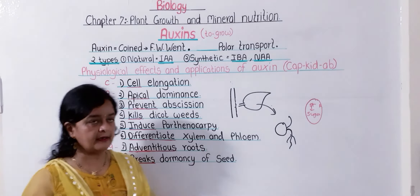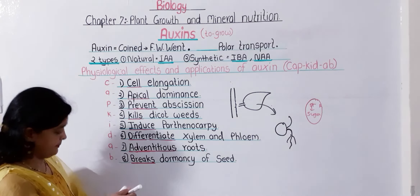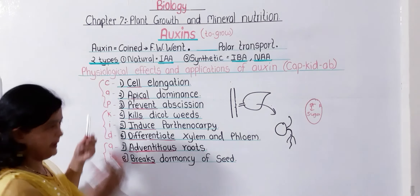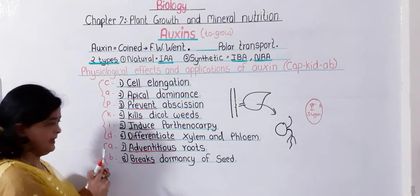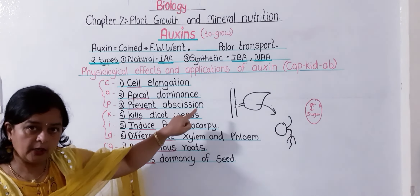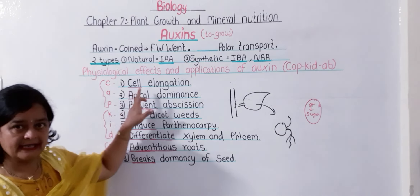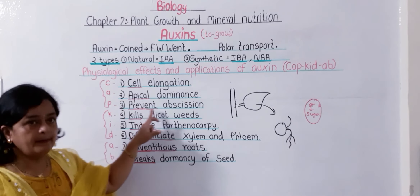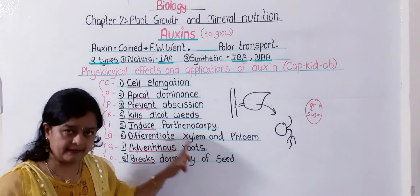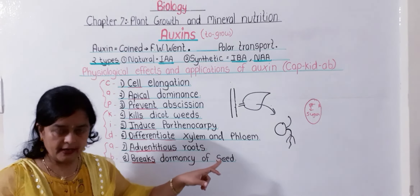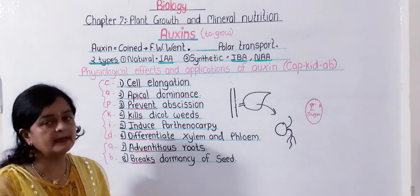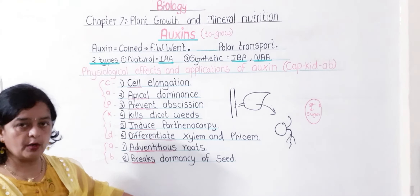To remember all 8 functions, use the keyword mnemonic CAP-KID-AB. C for cell elongation, A for apical dominance, P for prevent abscission. K for kills dicot weed, I for induces parthenocarpy, D for differentiates xylem and phloem. A for adventitious roots, B for breaks dormancy of seed. This completes our first hormone — auxin.